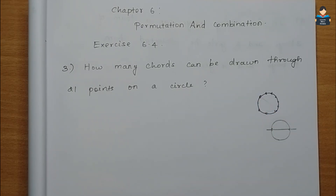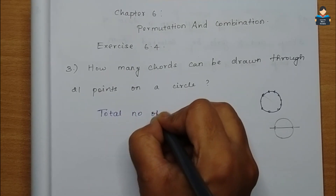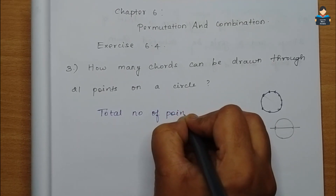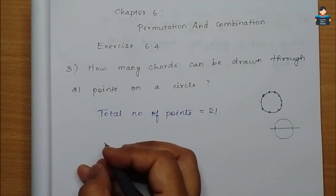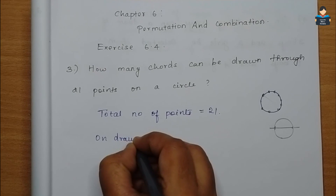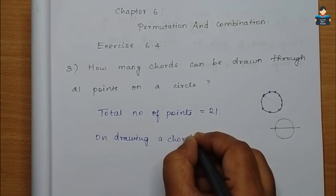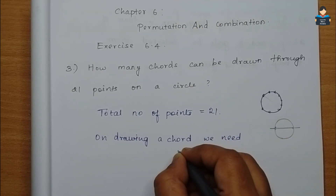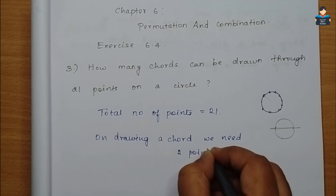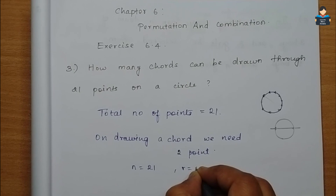Total number of points is 21. On drawing a card, to draw one card we need two points. So n = 21 and r = 2.